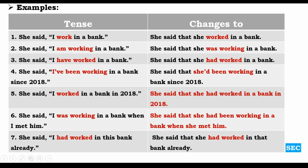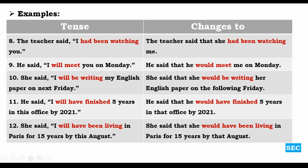'I worked in a bank' — simple past — becomes past perfect: 'She had worked in a bank.' 'I was working in a bank' — past continuous — becomes past perfect continuous: 'She had been working in a bank.' 'I had worked' — past perfect — remains the same, 'had worked' stays 'had worked.' The teacher said, 'I had been watching you' — past perfect continuous — doesn't change its form in reported speech either: 'She had been watching me.' No change at all.